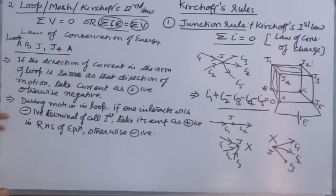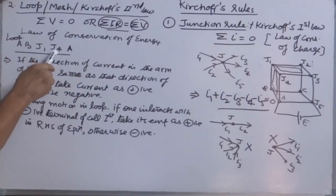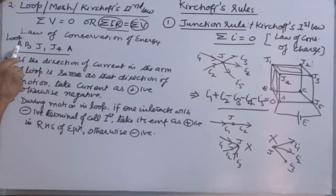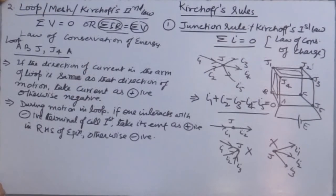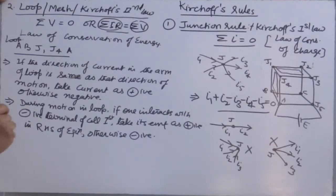Now, direction of motion in a loop - during motion in a loop, what exactly do I mean to say? Once you have opted a loop and mentioned your loop, that loop A, B, J4, A. If current in this arm is flowing from A to B, and the current is also flowing from A to B, take current positive. If current in this arm is flowing B to A, then take current negative. Here in the left-hand side, while multiplying the respective resistance present in the arm.